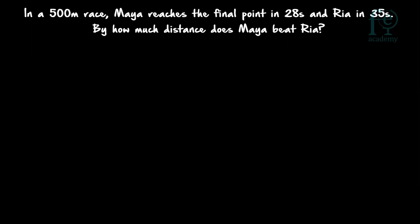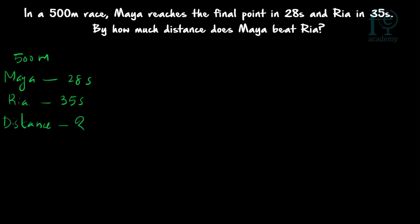Second question: In a 500 meter race, Maya reaches the final point in 28 seconds and Priya in 35 seconds. By how much distance does Maya beat Priya? The entire distance is 500 meters. Maya will be taking only 28 seconds and Priya will be taking 35 seconds. You have to find out by how much distance Maya will be winning the race. Maya beats by 7 seconds.